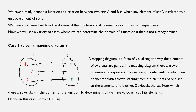Case number one: given a mapping diagram. A mapping diagram is a form of visualizing the way the elements of two sets are paired — exactly like the one we have in front of us. In a mapping diagram, there are two columns that represent the two sets, the elements of which are connected with arrows starting from the elements of one set to the elements of the other. The set from which these arrows start is the domain of the function. To determine it in such a case, all we have to do is list all its elements.